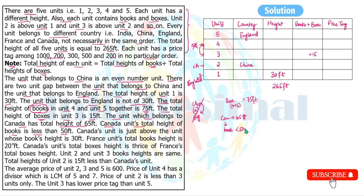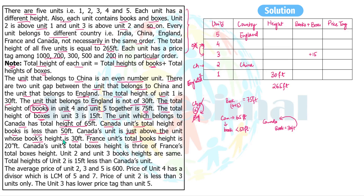Canada is just above the unit whose books height is 30 feet. France's total books height is 20 feet. Canada's total boxes height is three times France's total boxes height. Units two and three have the same books height — call it x. Since both are equal, wherever Canada is placed, the unit below it will have books height x = 30 feet.